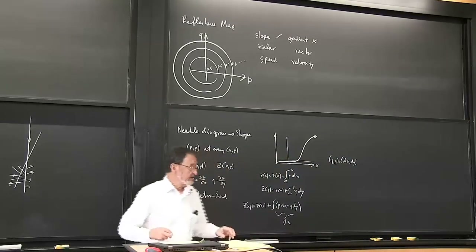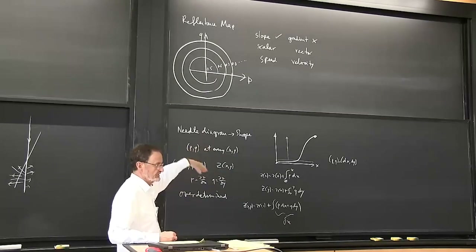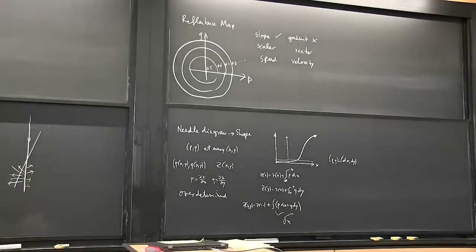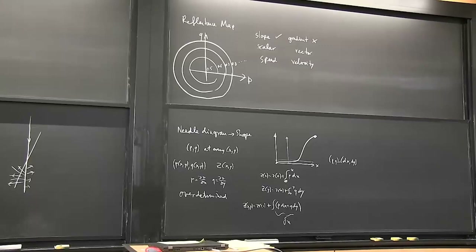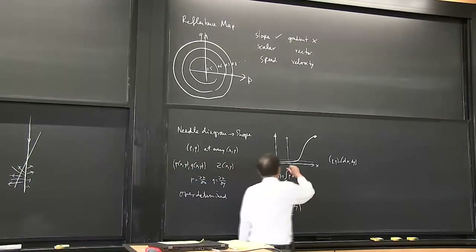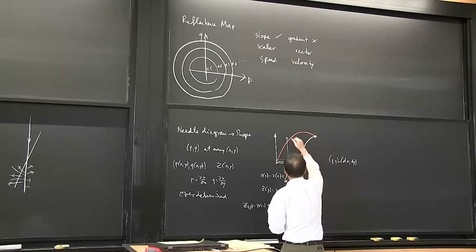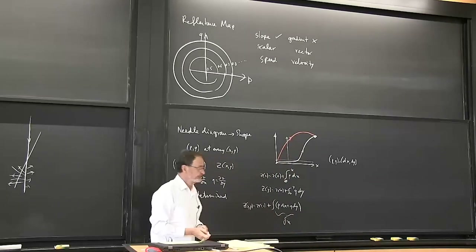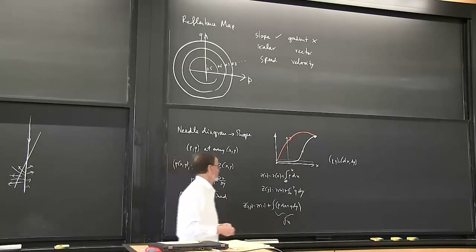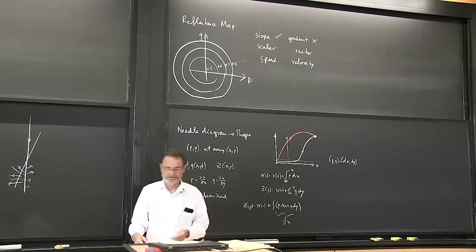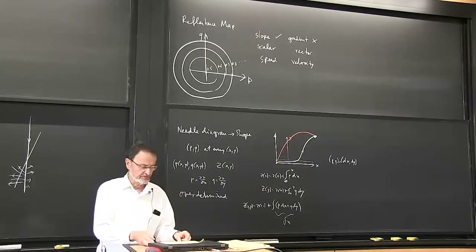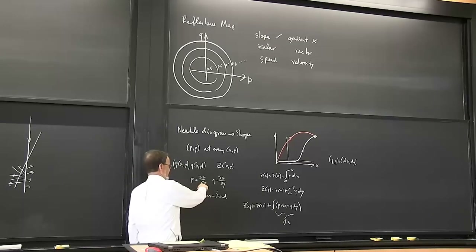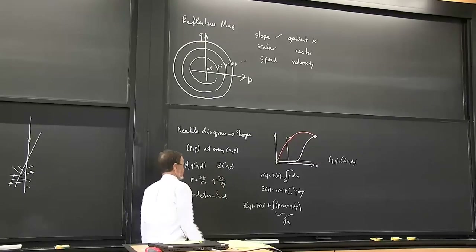What if somebody else comes along and says they don't like the contour I chose, they're going to go a different way? What you'd hope is that they get the same answer, but there's no guarantee of that. Because these P's and Q's are determined experimentally - they're subject to measurement noise. They're not perfect. They're not actually the derivatives of Z with respect to X and Y - they're estimates which include some noise.